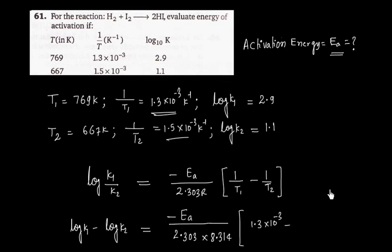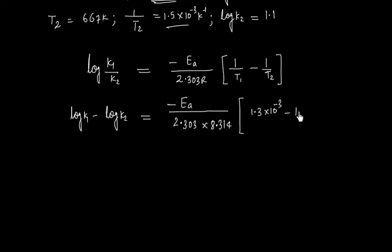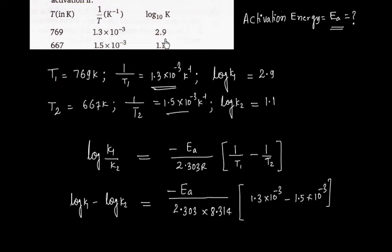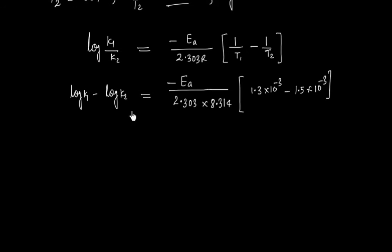1.5 into 10 to the power minus 3. Log K1, log K2 is given. So 2.9, 1.1. This is minus Ea by 2.303, 8.314 into minus 0.2 into 10 to the power minus 3.